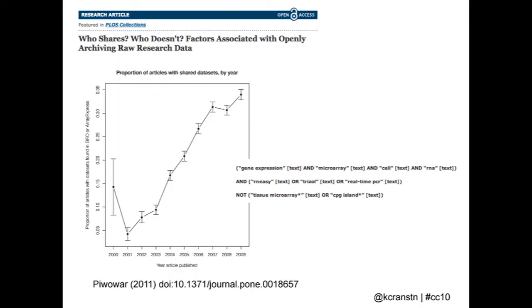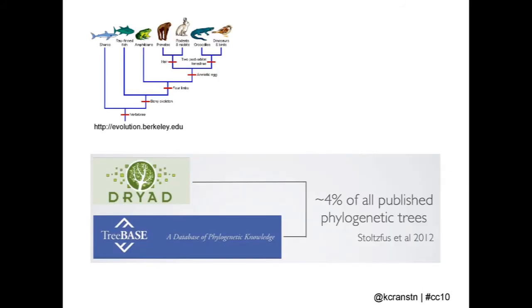But those sorts of sticks are not enough. We know that if we look at, for example, this study with gene expression data — databases exist, there are agreements to share data — only 35% of studies are actually making their data available. In an example closer to my heart, I build evolutionary trees of how species are related. We've published tens of thousands of them, but 96% are only available as figures in a PDF file. So the data is not being deposited.